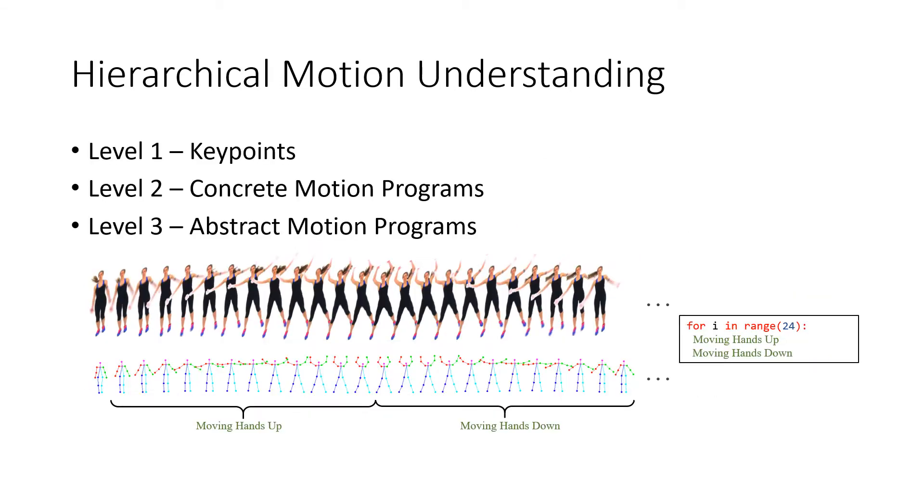Once we have a concrete motion program, we are now interested in capturing higher level relationships such as repetitions. We do this using abstract motion programs. In our example, this level would be able to capture the repetitive pattern of the two up and down primitives using a for loop structure as shown on the right.